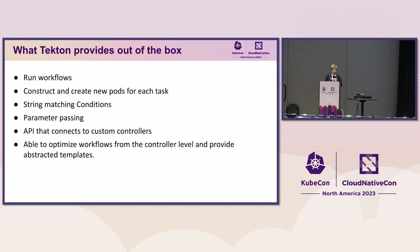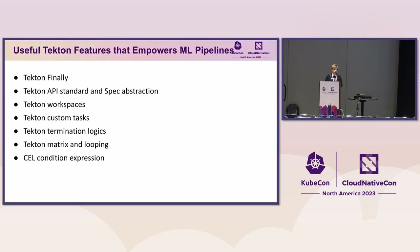As we looked at ML pipelines on top of Tekton, we identified features we wanted, and our IBM team actually worked with the Tekton committee to accomplish them. First, we have Tekton Finally, which helps define error-handling cleanups when a pipeline finishes or fails. We also have very standard API definitions with many ways to abstract specs — you can define global or cluster-wide specs shareable across multiple pipelines or across all tasks inside the same pipeline.